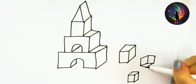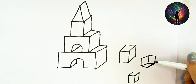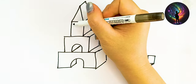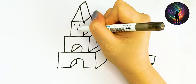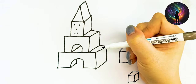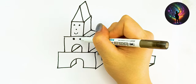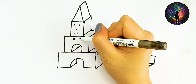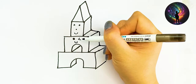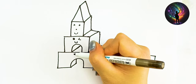A, B, C, D, E, F, G, H, I, J, K, L, M, N, O, P, Q, R, S, T, U, V, W, X, Y, Z. Now I know my ABCs. Next time won't you sing with me?